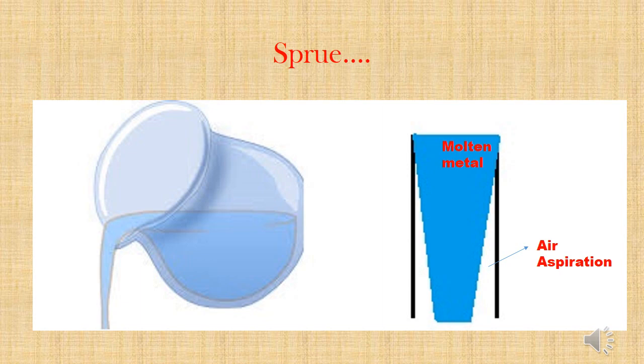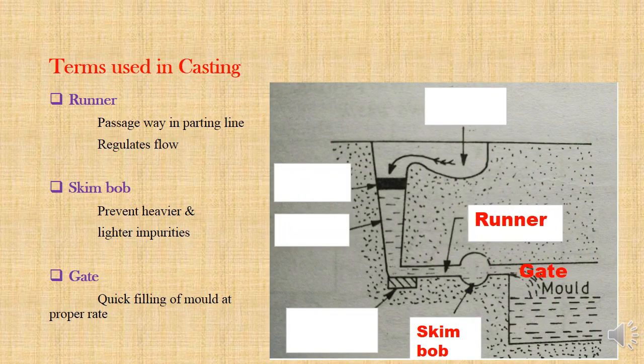This is very important, so you can get one question from GATE. Now we are going to see the horizontal passage. Runner is a passageway which regulates the molten metal along the parting line. Parting line is the dividing line of two molding flasks. Skim bob is a bulged portion in which lighter impurities stay at the top and heavier impurities stay at the bottom. Gate is the real entry of molten metal into the mold, designed so that quick filling happens at a proper rate, and molten metal should flow through the runner at full level so that lighter impurities will settle at the top in the skim bob.